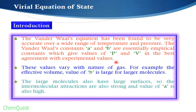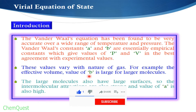The van der Waals constants a and b played a very important role. Now, the values of a and b vary with the nature of the gas — they are dependent upon the nature of gas molecules. For example, the effective volume, referred to as b, is large for larger molecules. So the value of b depends on molecular size: if gas molecules are smaller, b is smaller, and if gas molecules are larger, b is larger.